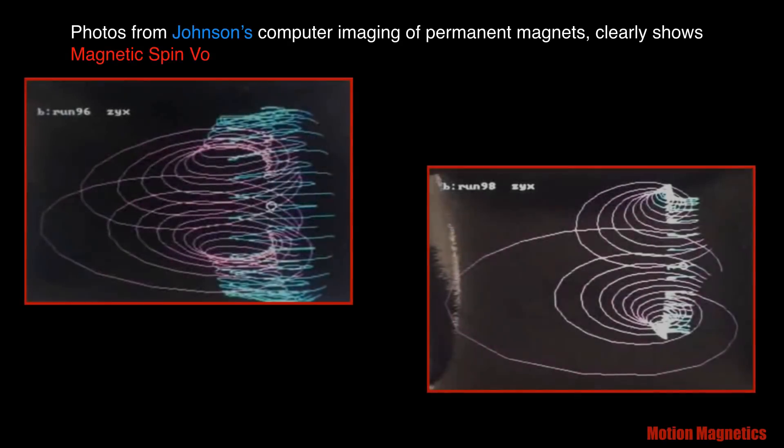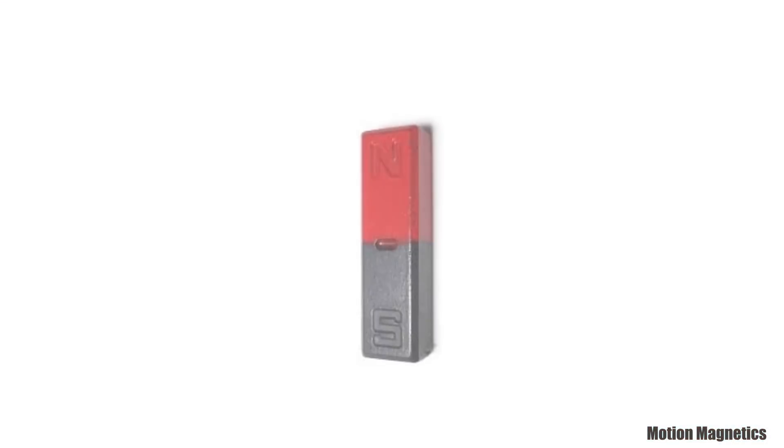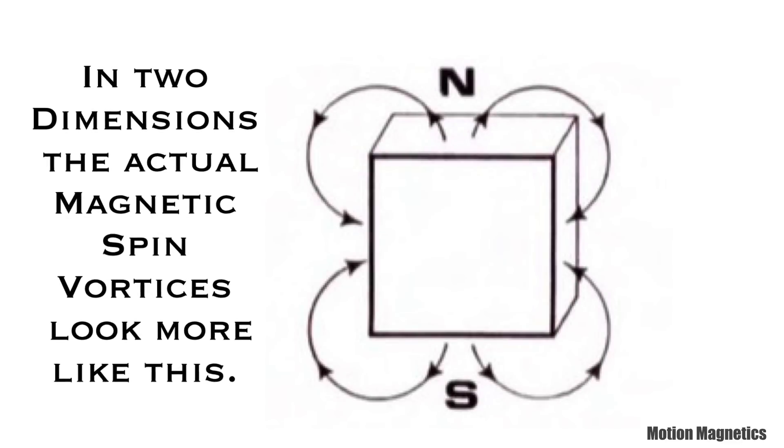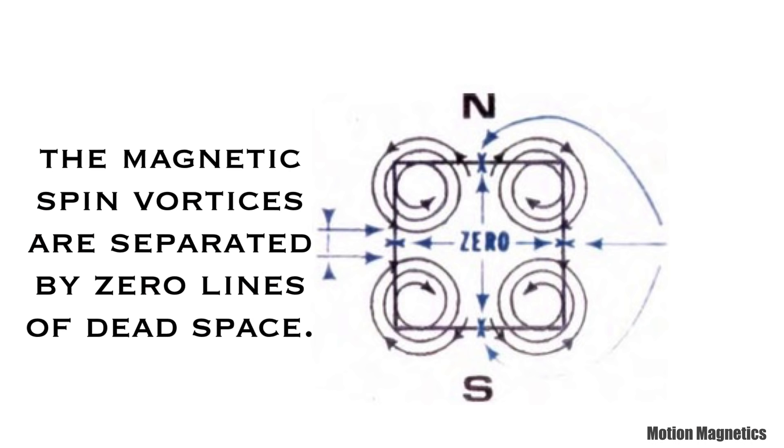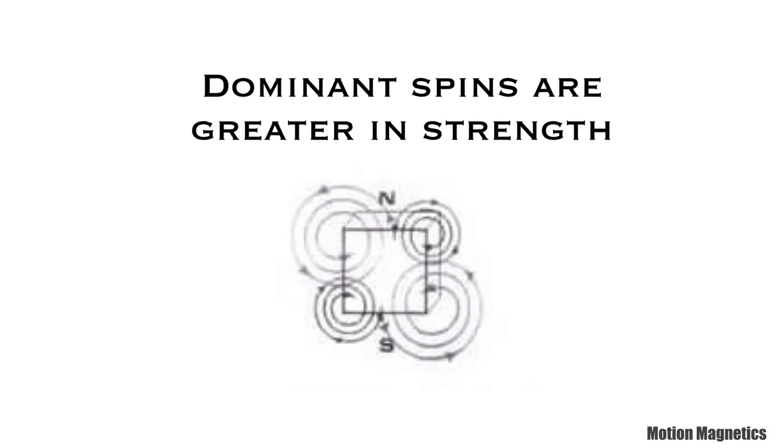Here are a couple of photos of their computer imaging from magnets that also clearly show magnetic spin vortices. Most textbook examples of magnetic fields look a lot like these examples, but in actuality, Johnson's mapping technology discovered that magnetic fields work more like these diagrams, with dual spins emanating from both north and south poles. He also discovered that the spins on one side tend to be greater than on the other.